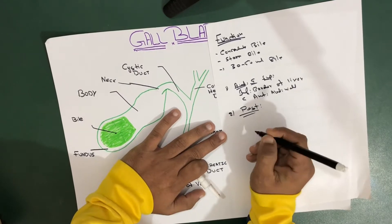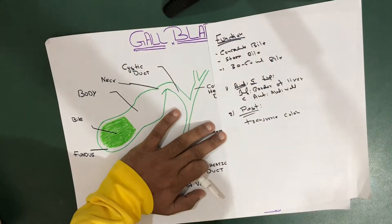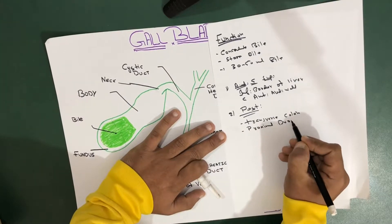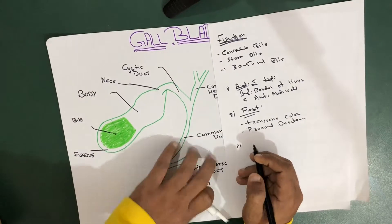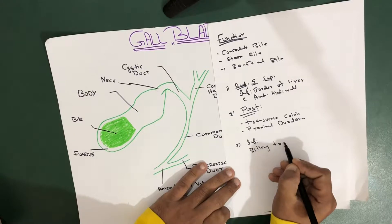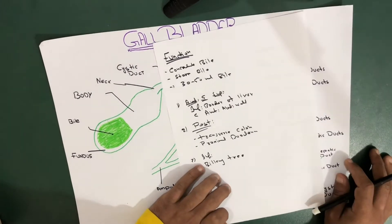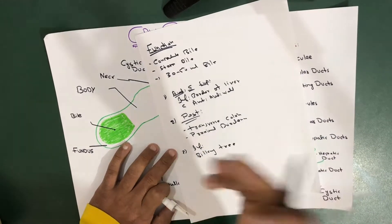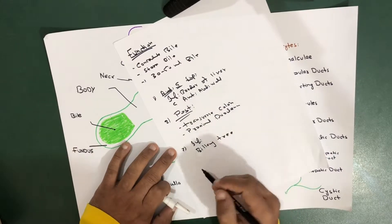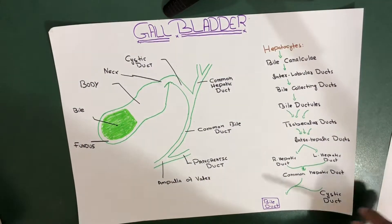The second boundary is the posterior boundary, which is formed by the transverse colon - that crosses from the posterior side - and the proximal duodenum. Both these structures are on the posterior side of your gallbladder. The third boundary is inferiorly, where we have the biliary tree - the duct system which brings all bile from your liver to the end of the second part of the duodenum - and the remaining parts of the duodenum.